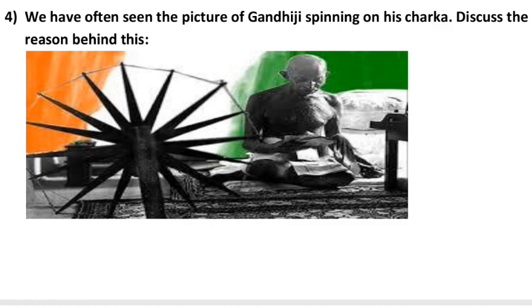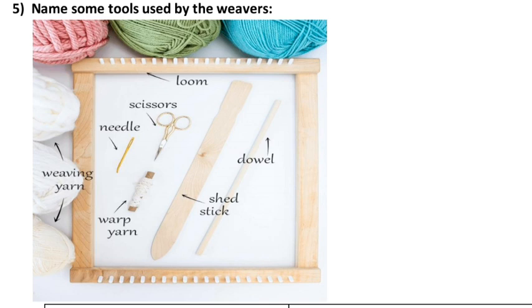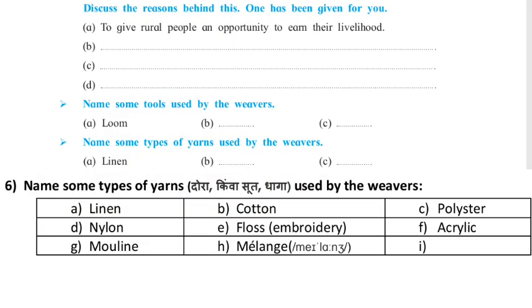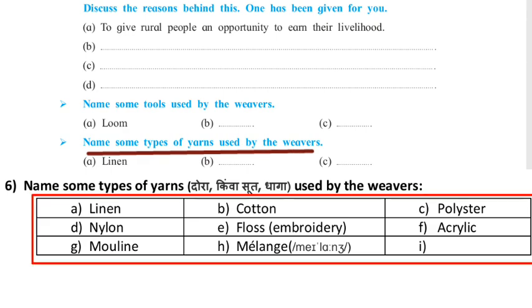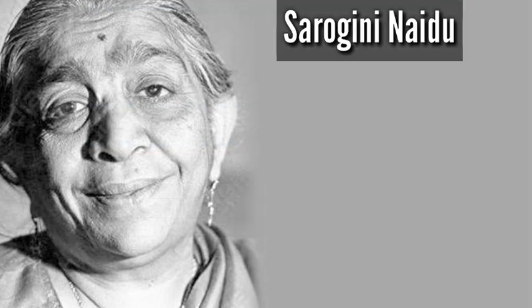For Activity 5, name some tools used by weavers. On the image you can see tools like loom frame, weaving yarn, tapestry needle, etc. For Activity 6, name some types of yarns used by weavers — the types of yarns are shown on screen.